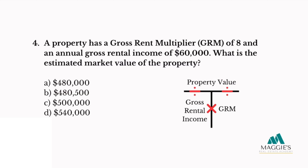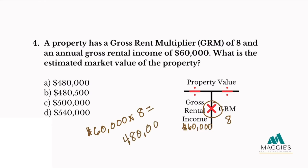Question four: A property has a GRM of 8 and an annual gross rental income of $60,000. What is the estimated market value of the property? A. $480,000, B. $480,500, C. $500,000, or D. $540,000. With a GRM of 8 in the right column and annual gross rental income of $60,000 in the left column, I multiply: $60,000 times 8 equals $480,000. The answer is A.